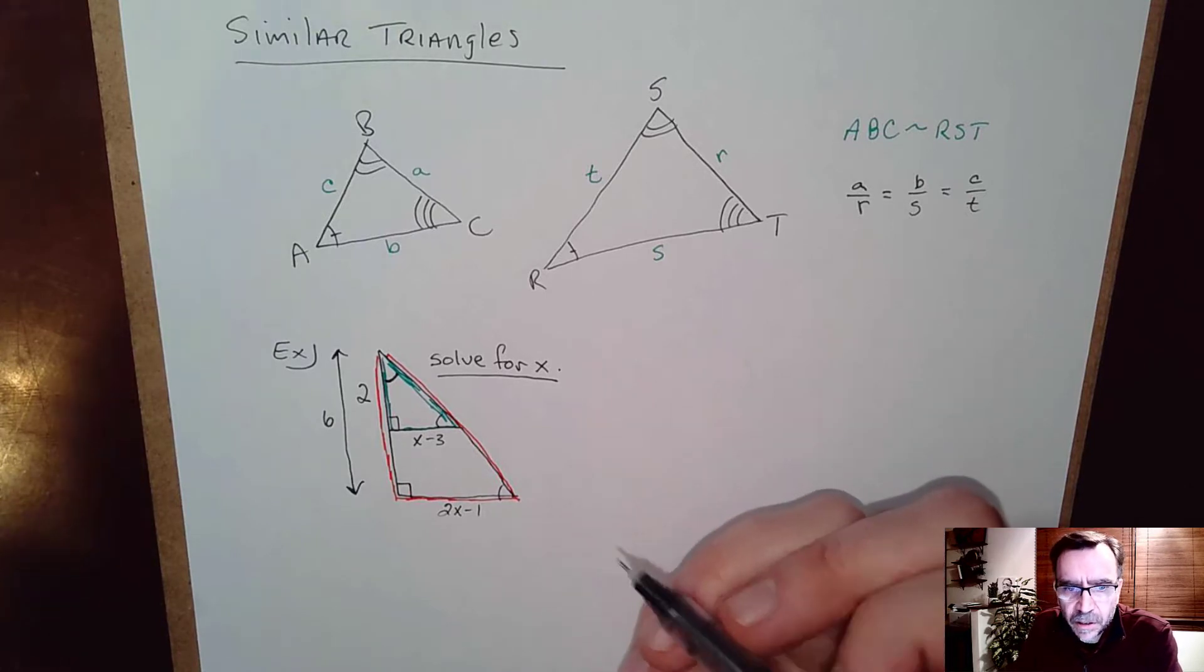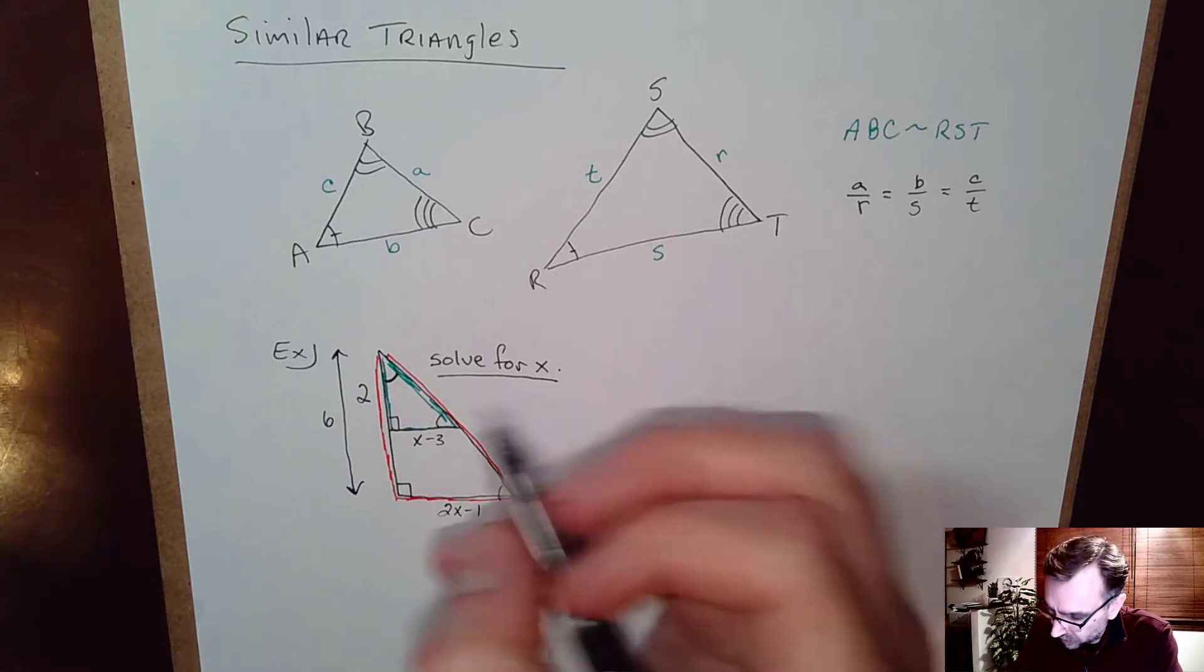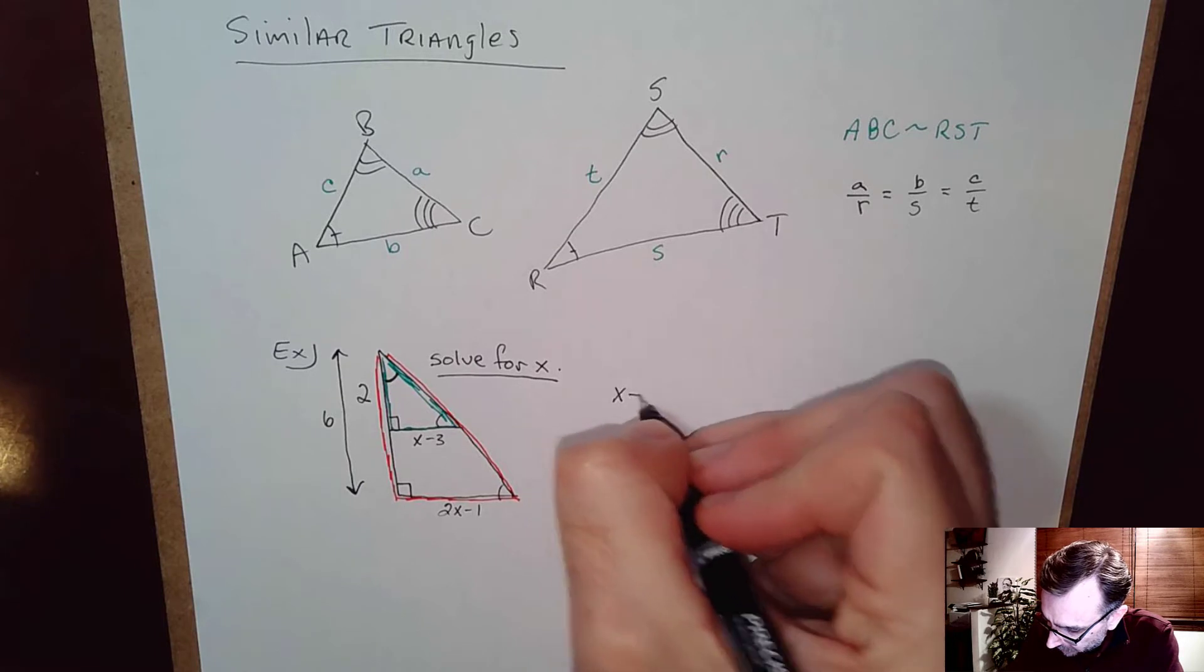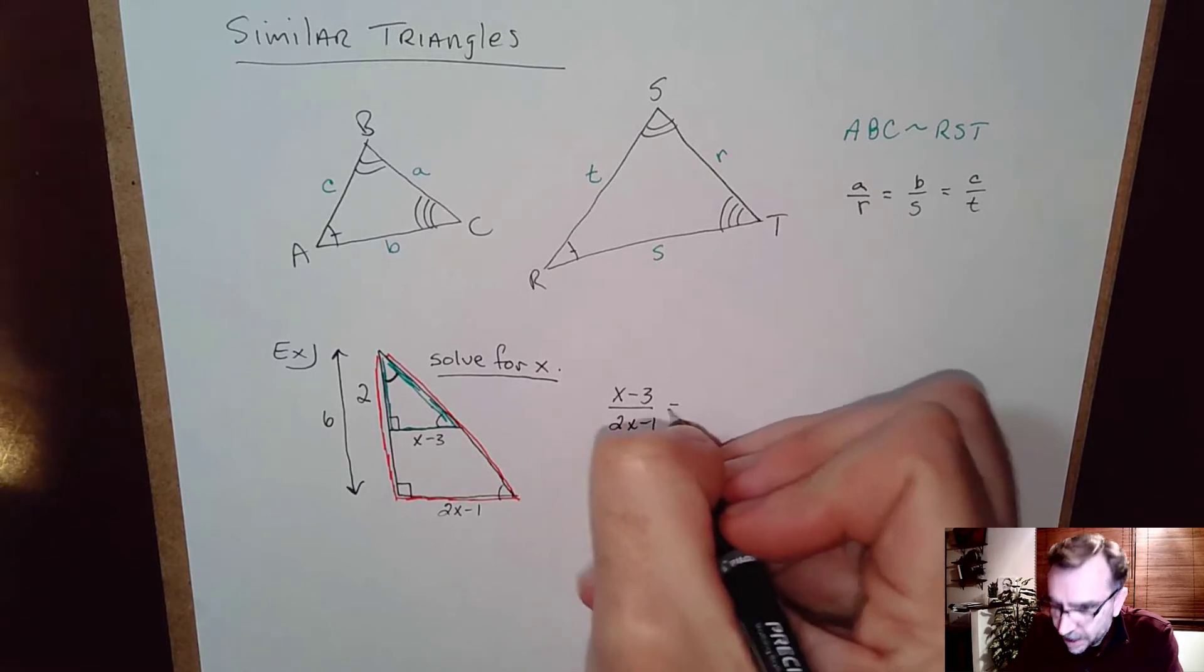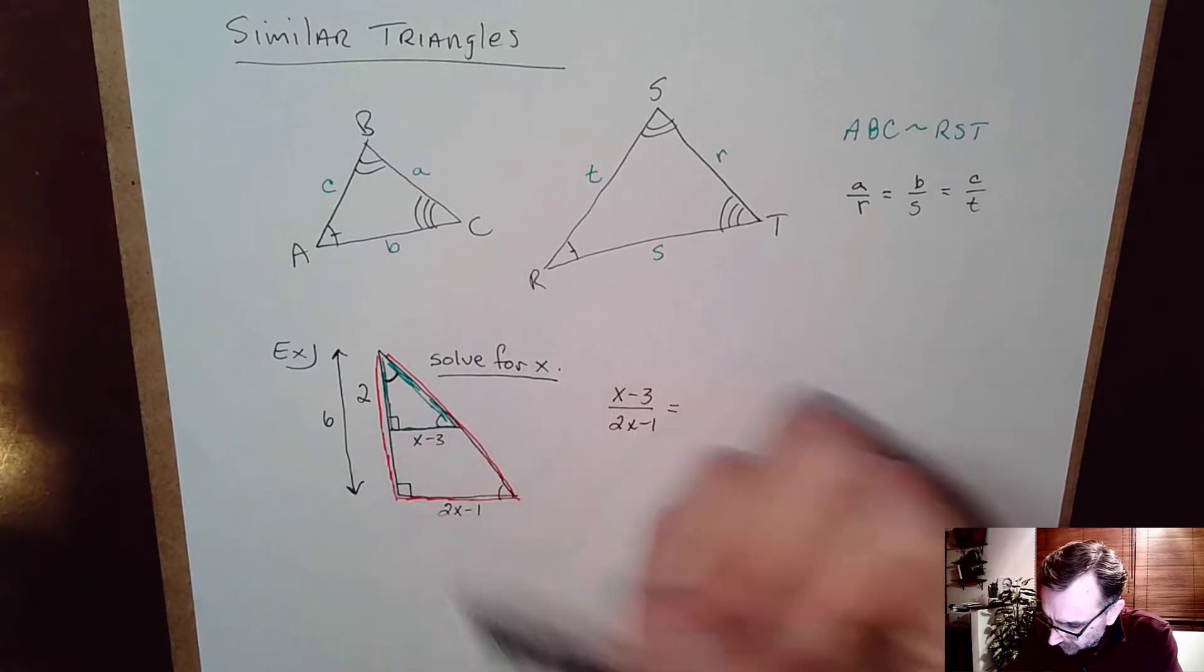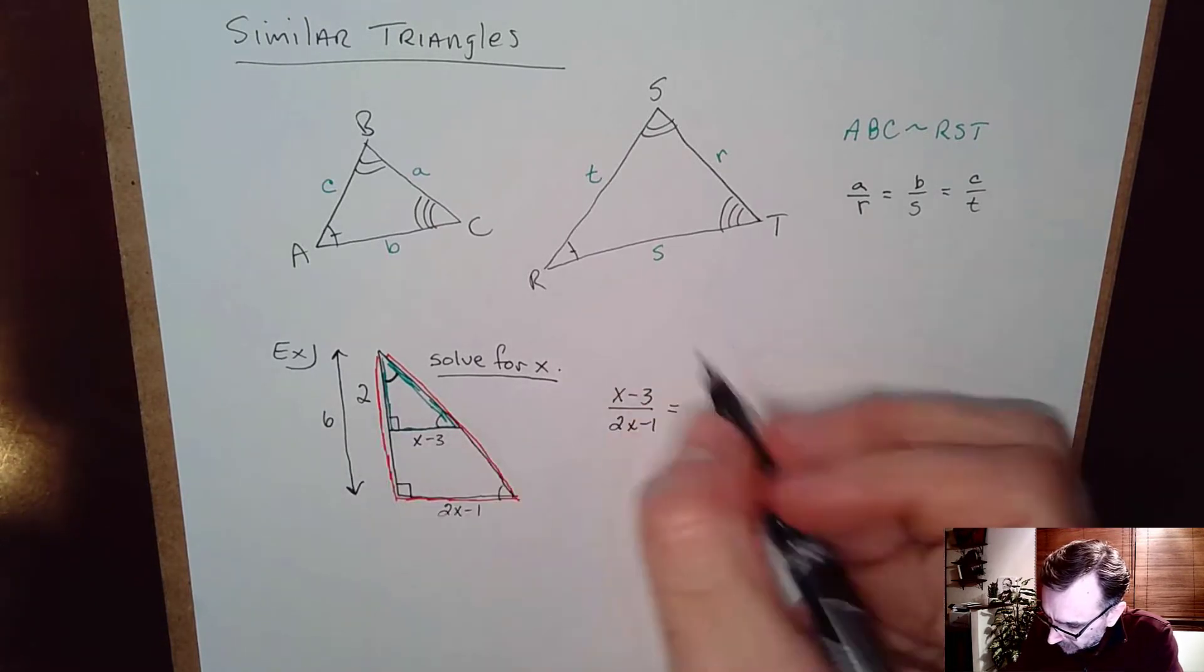Okay so what we have here are congruent or similar triangles. And so I can set up ratios to solve for x. Alright so the base of the small one is to the base of the big one. In other words x minus 3 is to 2x minus 1 as the side of the little one is to the side of the big one. So as 2 is to 6.